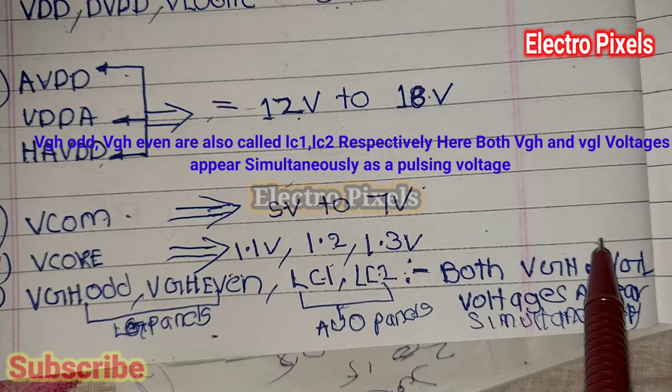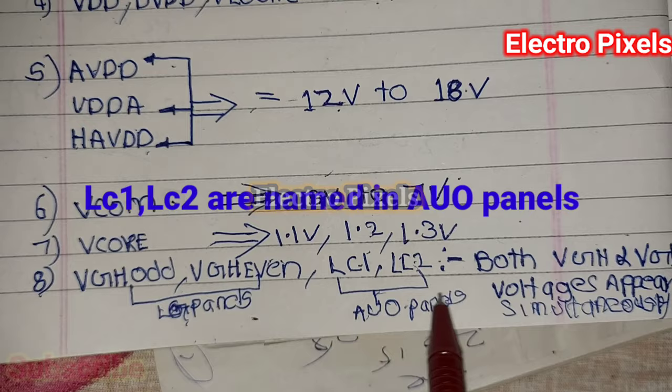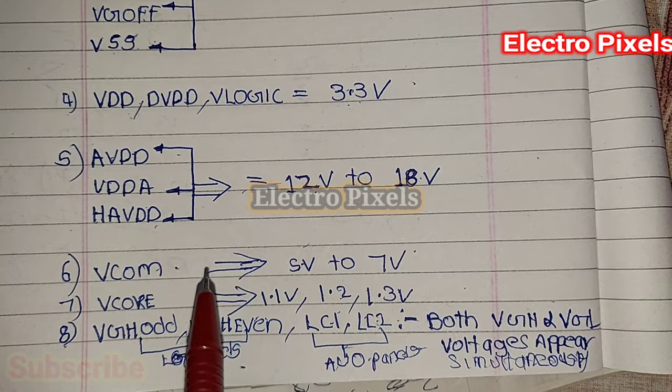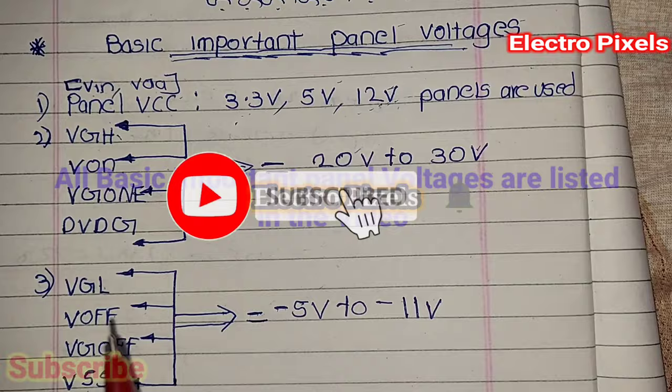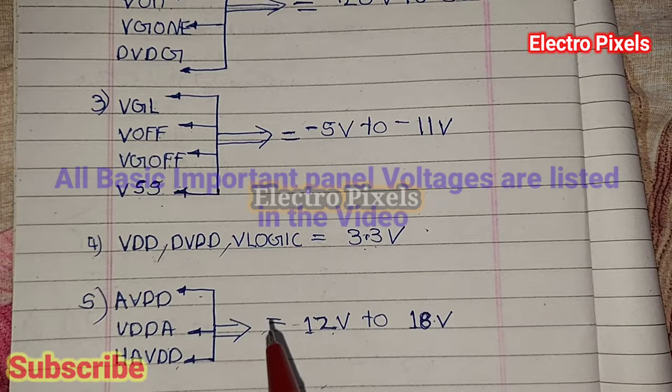The final ones are VJ-short and VJG1, also called LC1 and LC2 respectively. Both VGH and VGL voltages appear simultaneously as a pulsing voltage. VJ-short and VJG1 are names used in LG panels; LC1 and LC2 are named in AEO panels. Both are voltages coming from the level shifter IC, where VGL and VGH appear simultaneously.